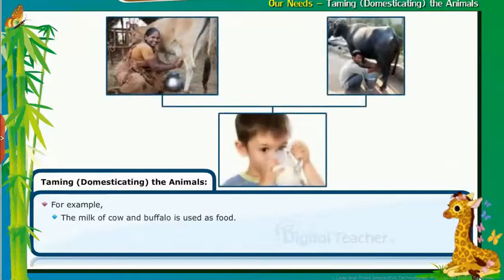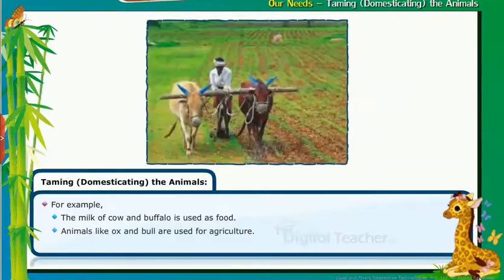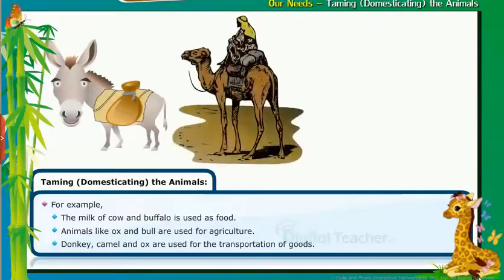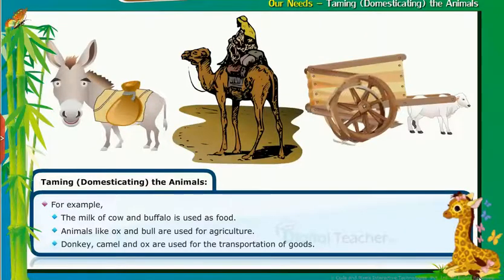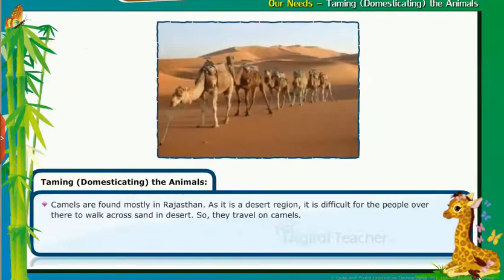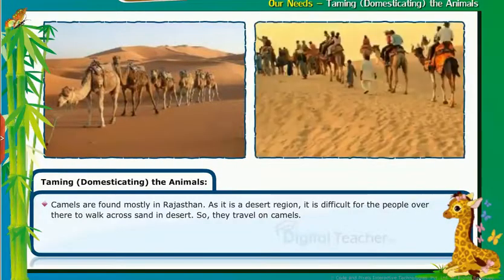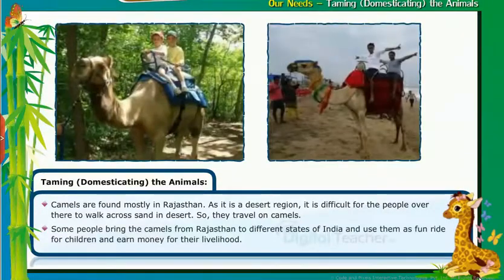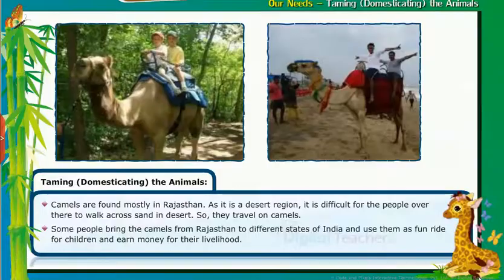From ancient times to the present day, man has been domesticating animals to fulfill his needs. For example, the milk of cow and buffalo is used as food. Animals like ox and bull are used for agriculture. Donkey, camel and ox are used for transportation of goods. Camels are found mostly in Rajasthan, as it is a desert region. People travel on camels and some bring camels from Rajasthan to different states to offer fun rides for children and earn money.